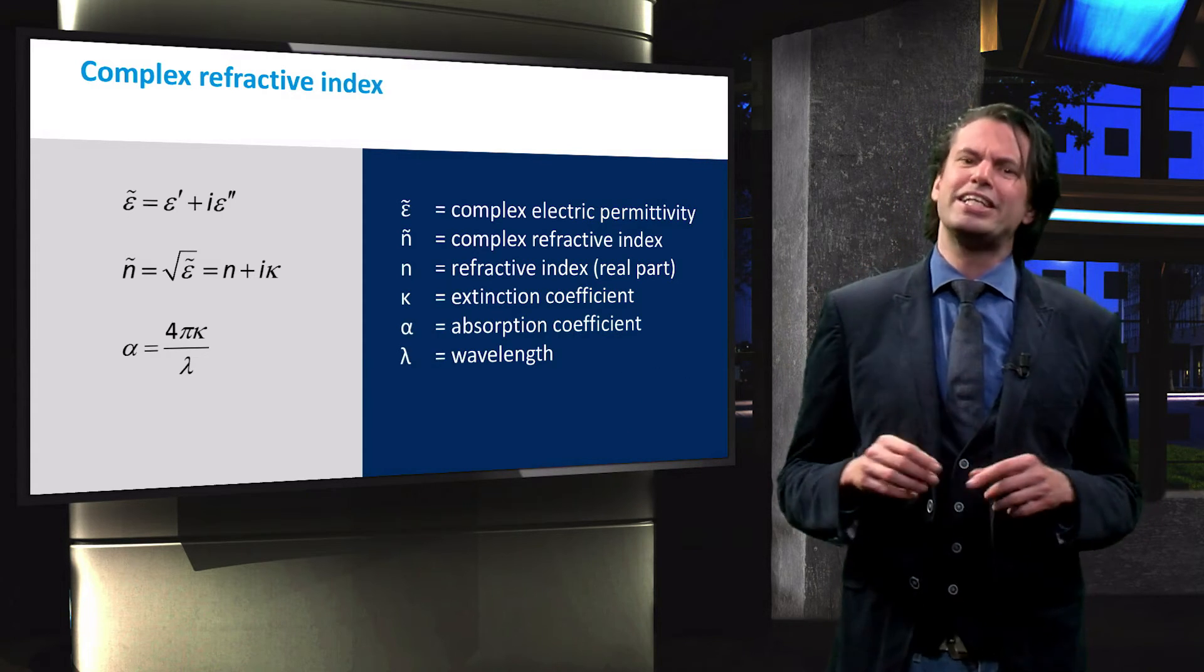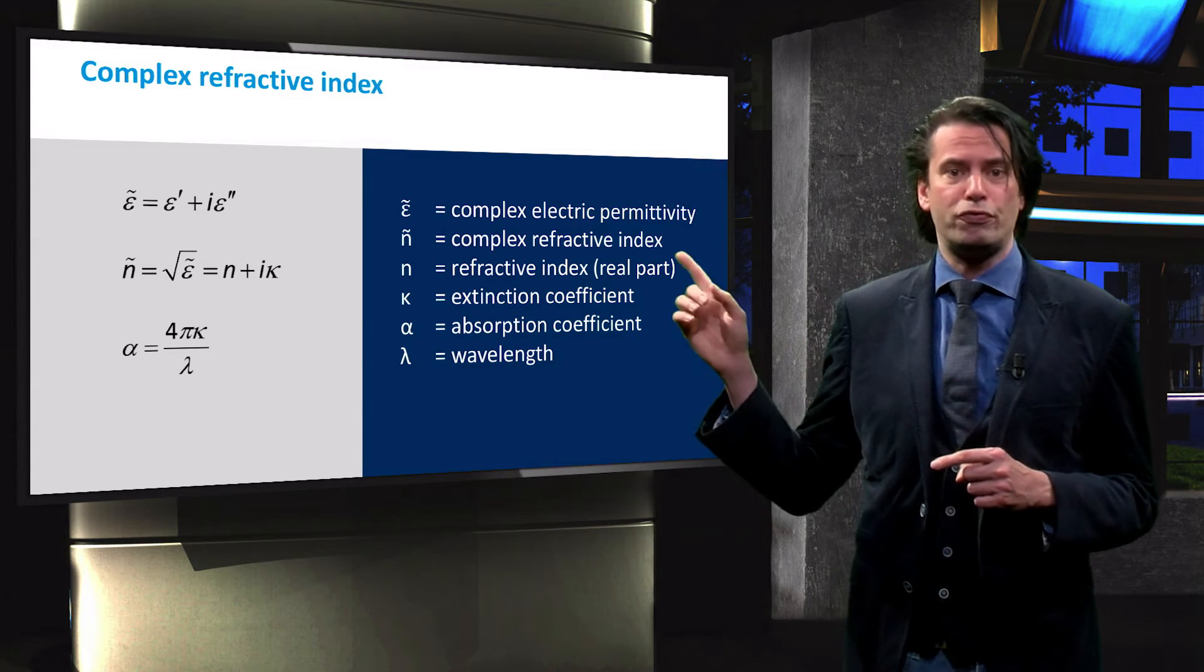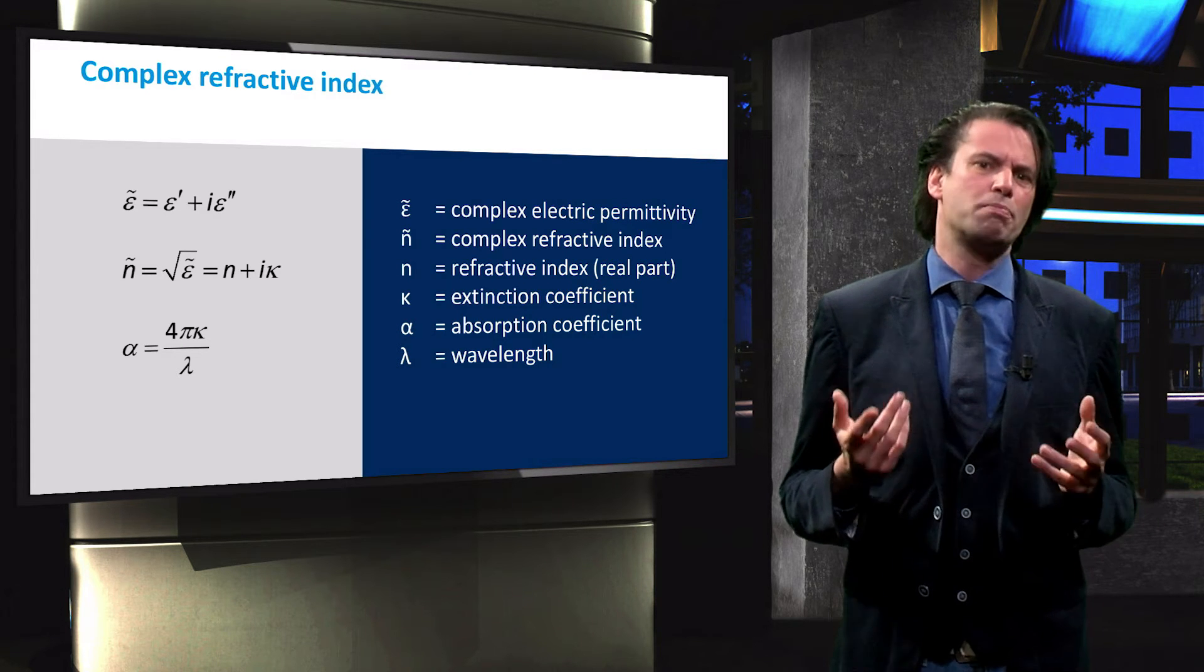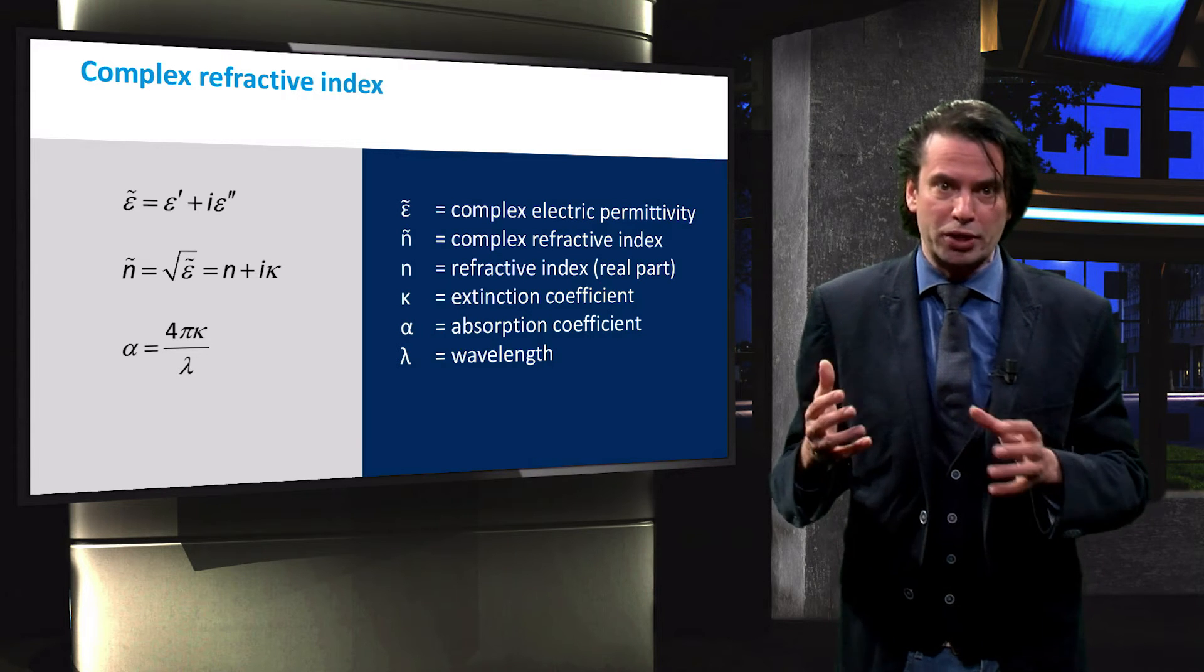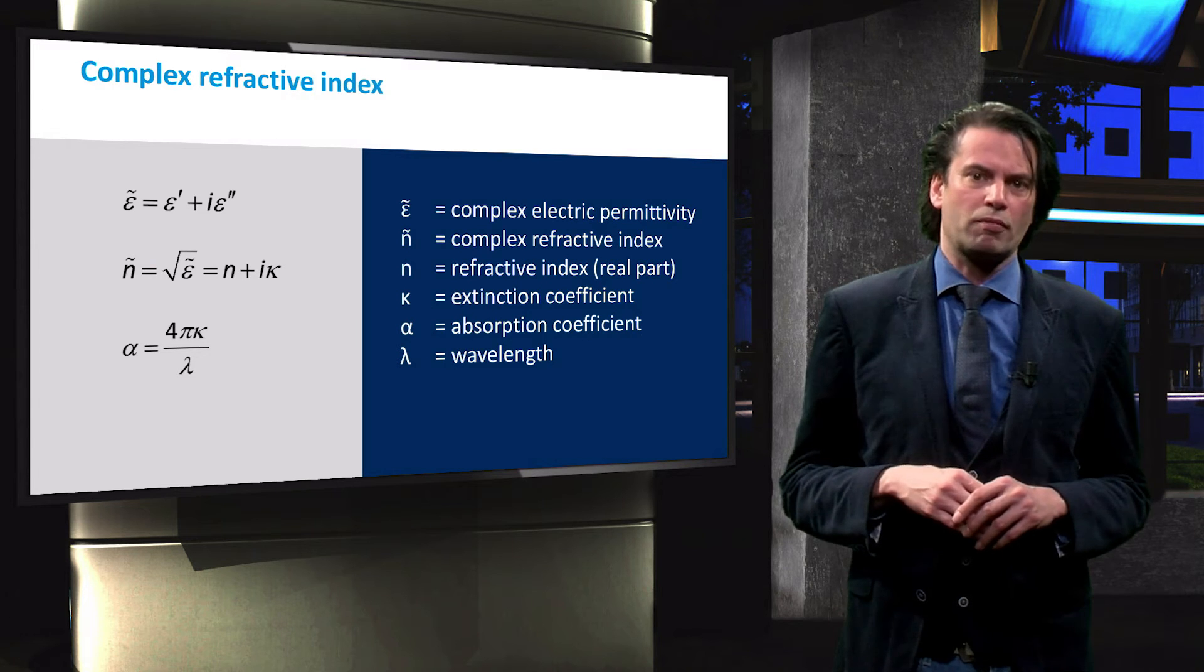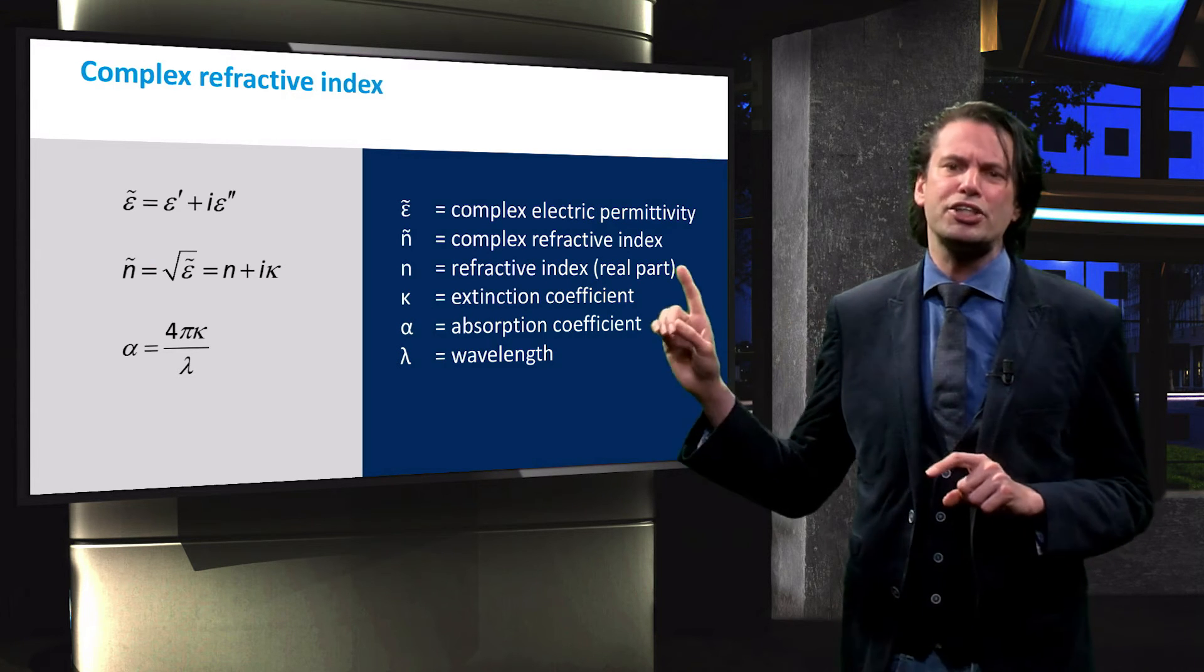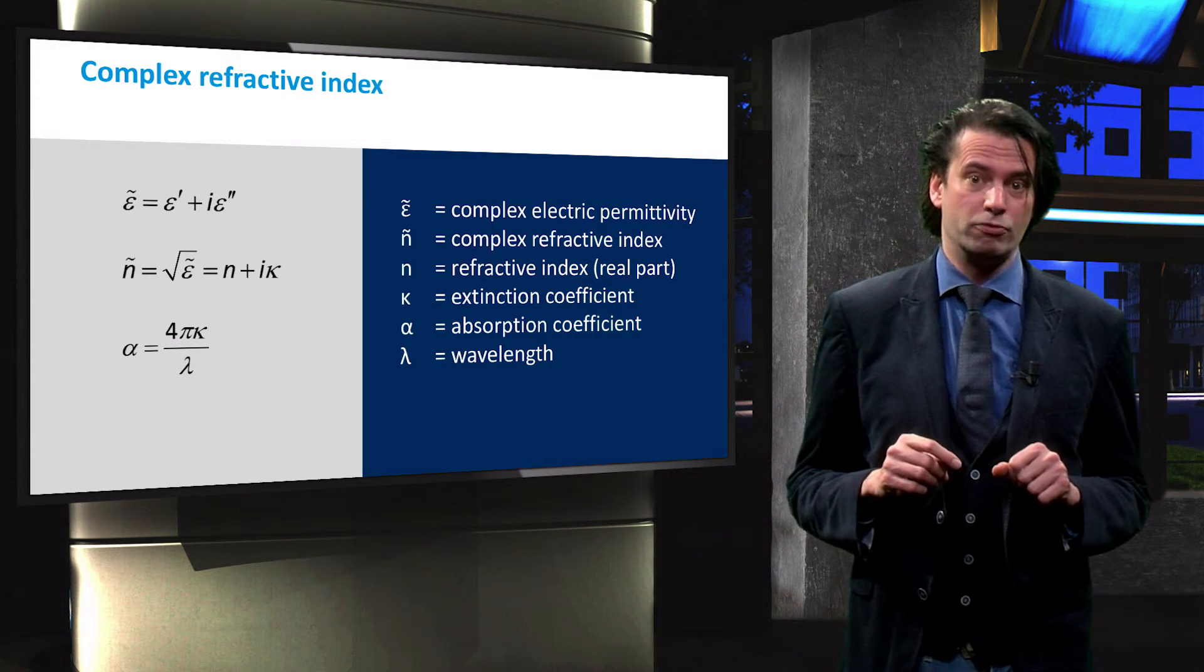The extinction coefficient is related to the absorption coefficient through the photon wavelength. The absorption coefficient is a measure of the absorbed light intensity per unit path length and is an important property of a material. This relation clearly shows that the larger the extinction coefficient, the greater the light absorption in a medium will be.